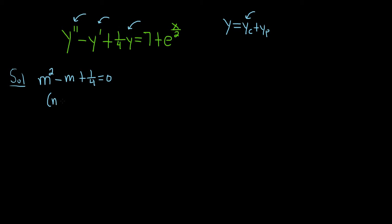This factors as m minus 1½ squared. If you square the 1½, you get 1¼. If you multiply the cross terms, you get negative 1½m times 2, which is negative m — that's the middle term. Squaring the m gives m squared, so this checks out. So m equals 1½ with multiplicity 2, meaning we have a repeated real root.